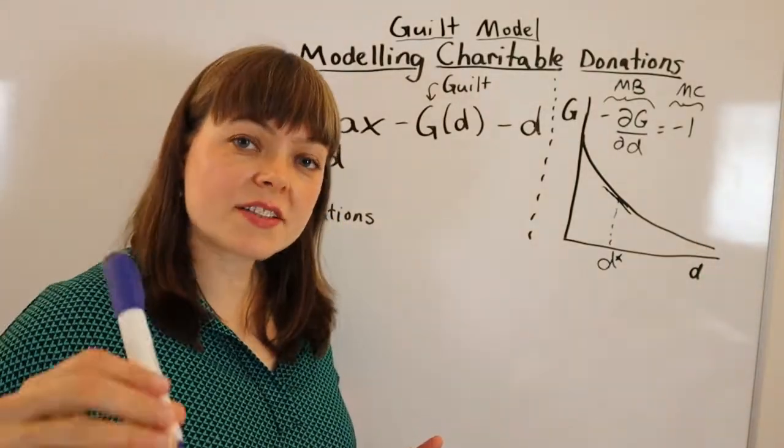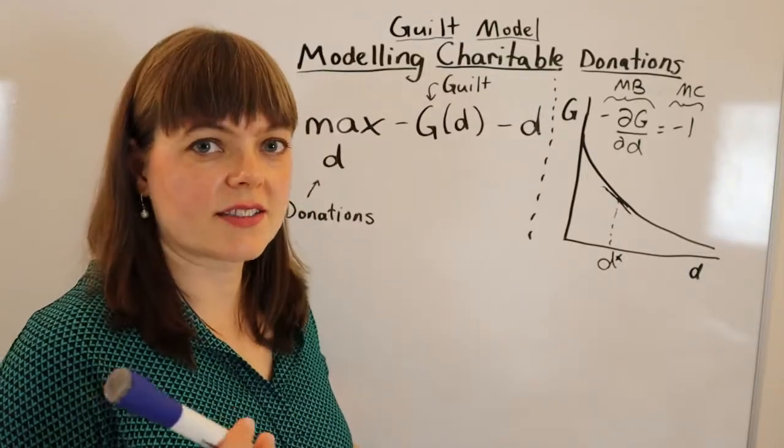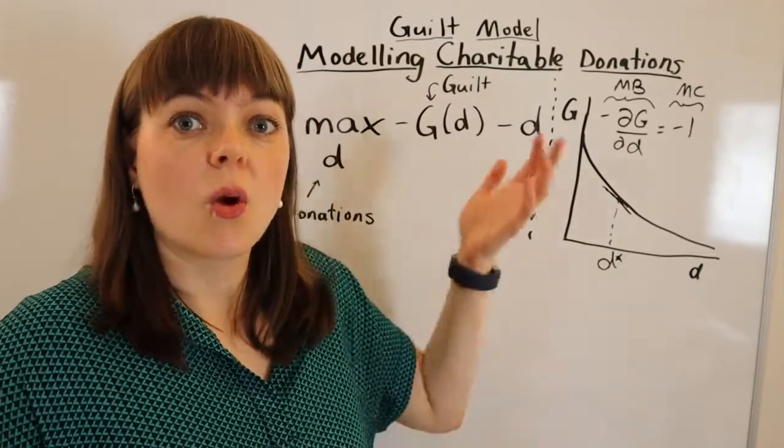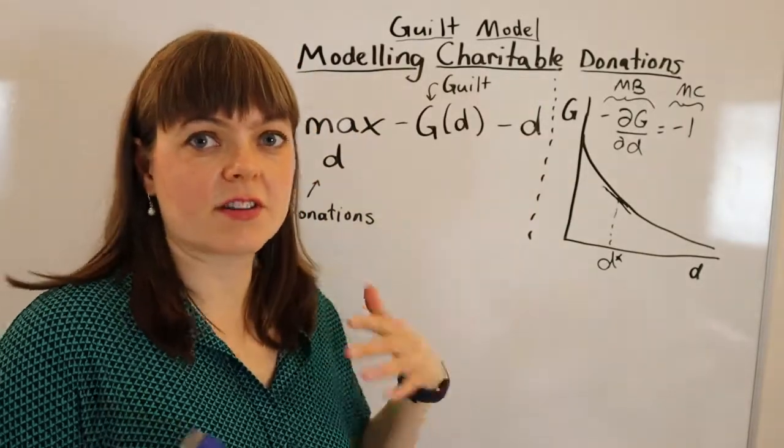Now when I'm having students model guilt, I oftentimes like to introduce the concept of a suggested donation. What should you set the suggested donation at? And how do you build that into this model?